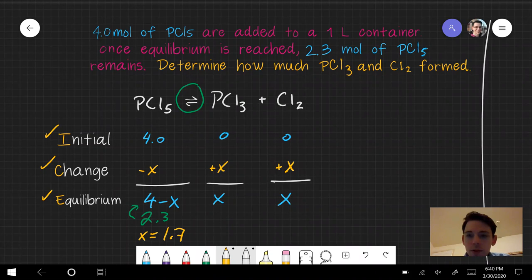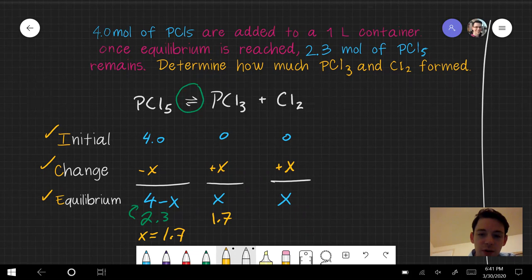Okay, so there we have our answer. We will form 1.7 moles of both of the two products by using up 1.7 moles of PCl5. So that's our first problem.